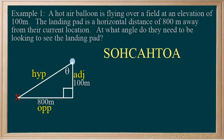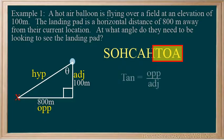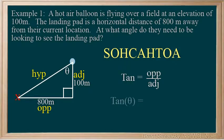Looking at the SOHCAHTOA, and knowing that we want to use the opposite, 800 meters, and the adjacent, 100 meters, tan is the ratio we need. Tan of theta equals 800 over 100.